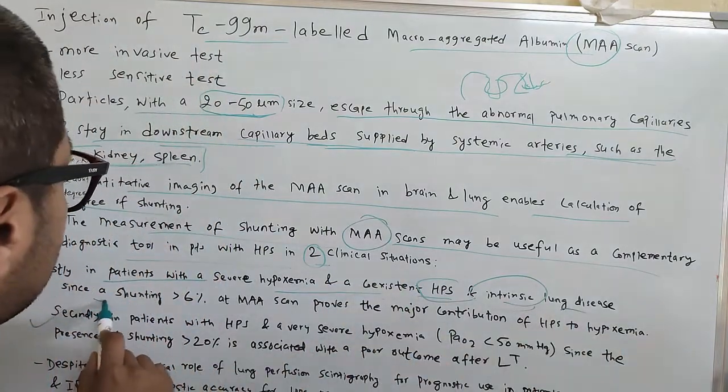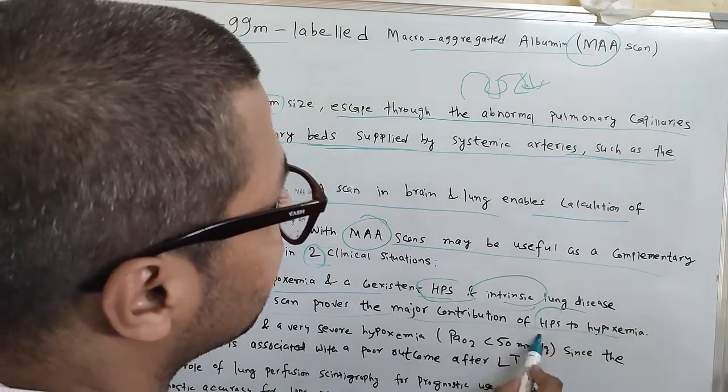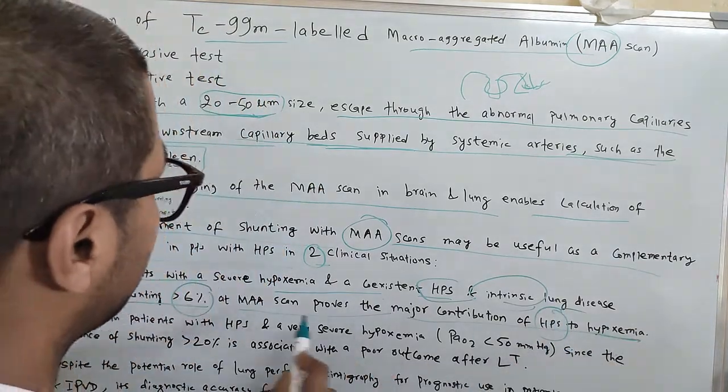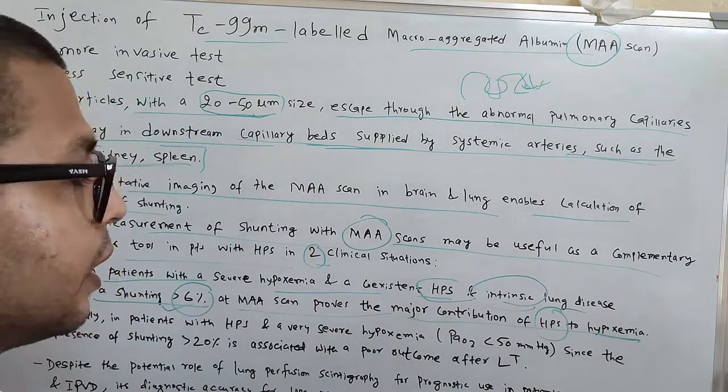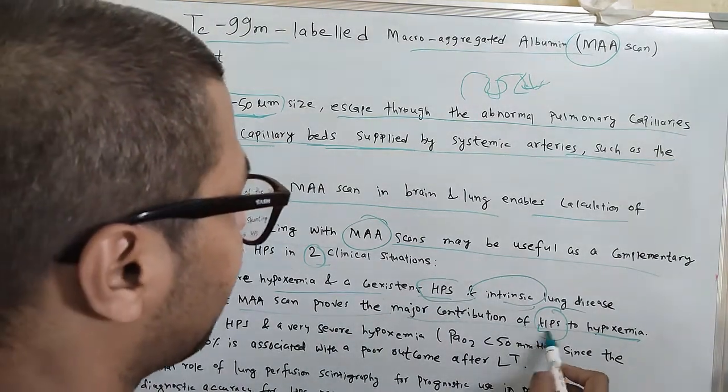In this condition, shunting greater than 6% on MAA scan proves the major contribution of HPS to hypoxemia. If shunting is greater than 6%, then you can say that the major contributing factor to hypoxemia is hepatopulmonary syndrome.